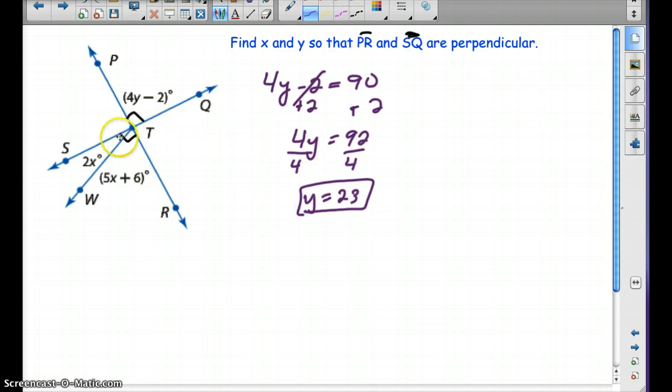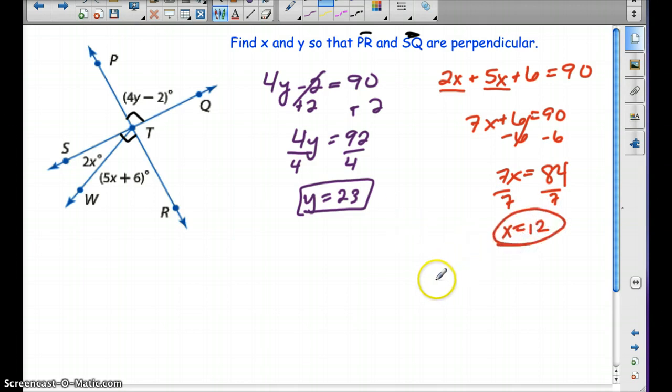Now these two angles together are complementary. They have to equal 90. So how can we do that? Well, we can add them together. And we could have 2X plus 5X plus 6 equals 90. So we add them together or combine like terms. 2X plus 5X is 7X plus 6 equals 90. Subtract 6. So 7X equals 84. We're going to divide by 7. And X equals 12. And we had to find X and Y, and we did. Y is 23. X is 12.